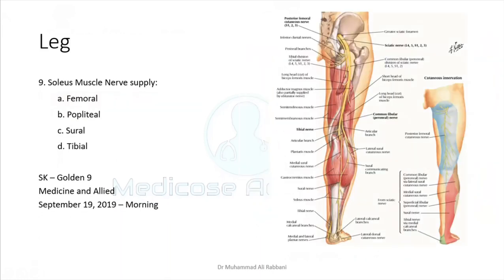The soleus muscle nerve supply: the posterior compartment of the leg is completely supplied by the tibial nerve. A useful rule — each compartment is supplied by the same nerve: anterior compartment of thigh by femoral, medial compartment by obturator, posterior compartment of thigh by tibial (mostly) and common peroneal for the short head of biceps, posterior compartment of leg by tibial nerve, lateral compartment of leg by superficial peroneal, anterior compartment of leg by deep peroneal.